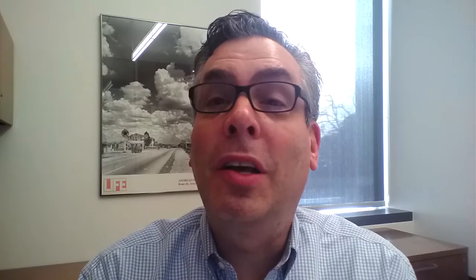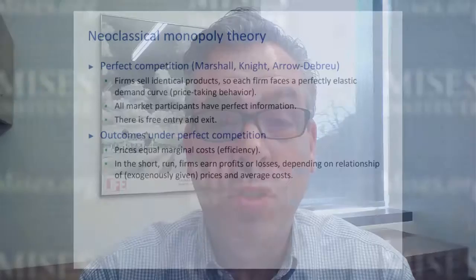Critical to understanding the supposed benefits of perfect competition are the long-run outcomes. In the long run, entry and exit drive prices to average costs so that all firms earn zero profits. If firms are earning positive economic profits in the short run, other firms will enter the market, driving down the market price. As the supply curve shifts to the right, the market price is driven down and those positive profits are squeezed down to zero.